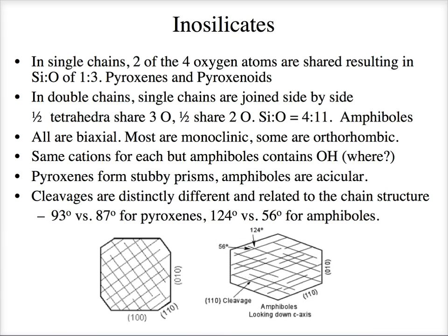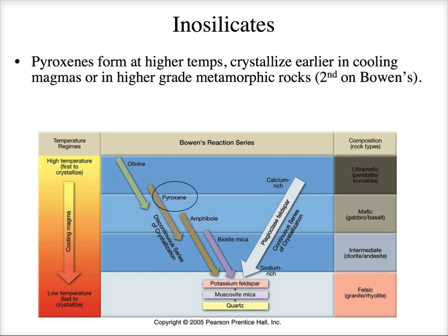The really distinctive quality between the two: pyroxenes have cleavage at almost 90 degrees — 93 and 87 — while amphiboles have cleavage at 124 and 56 degrees.